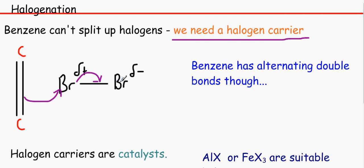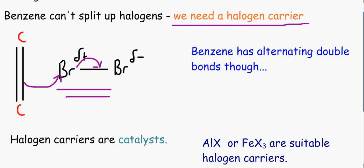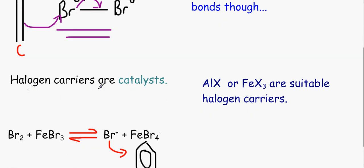But the thing about benzene is that it's got alternating double bonds. It goes through an equilibrium between one set of double bonds and the other set of double bonds. So it's very, very difficult for this heterolytic fission to happen. So what we use instead is a halogen carrier. And halogen carriers are catalysts.